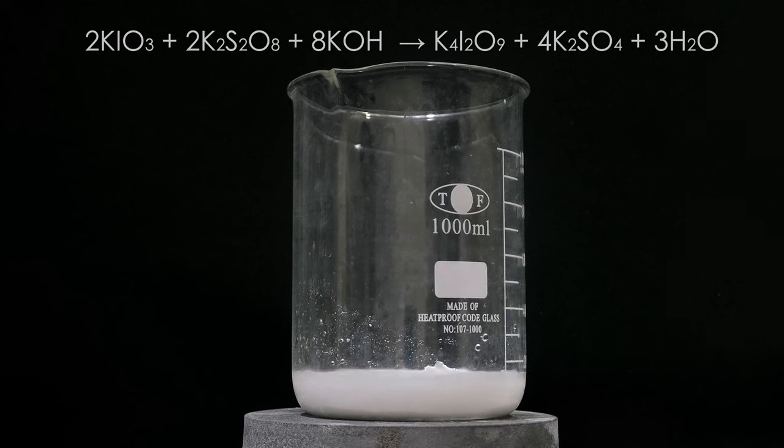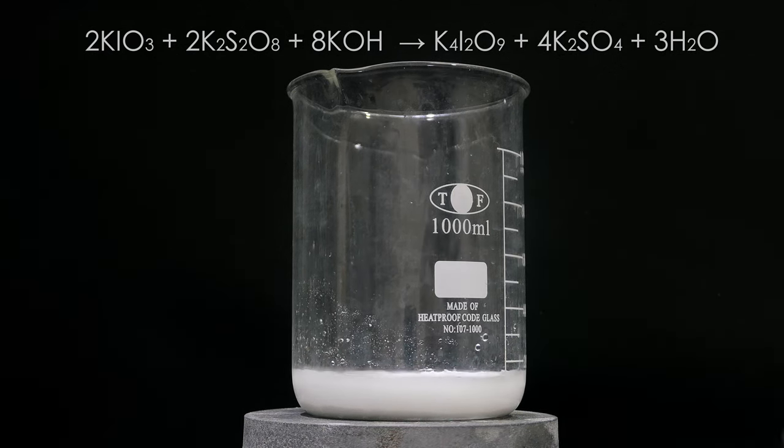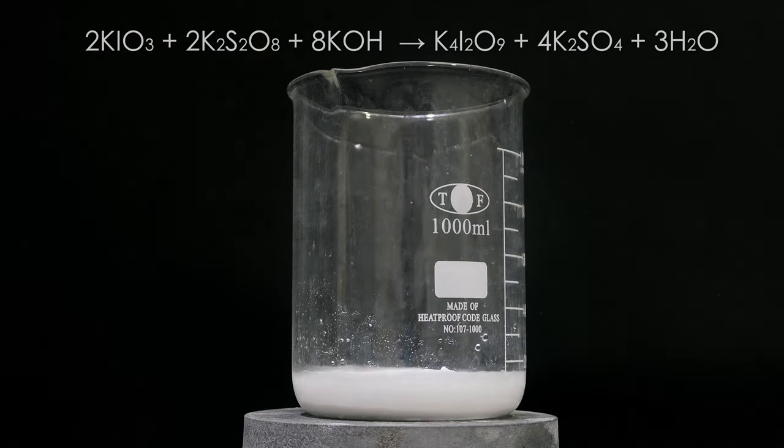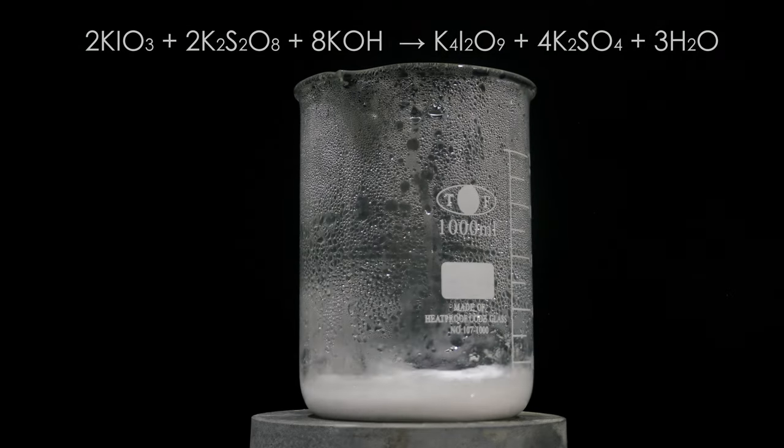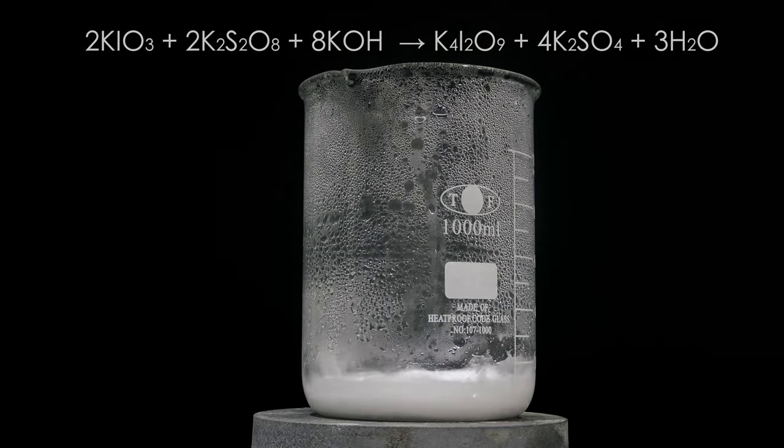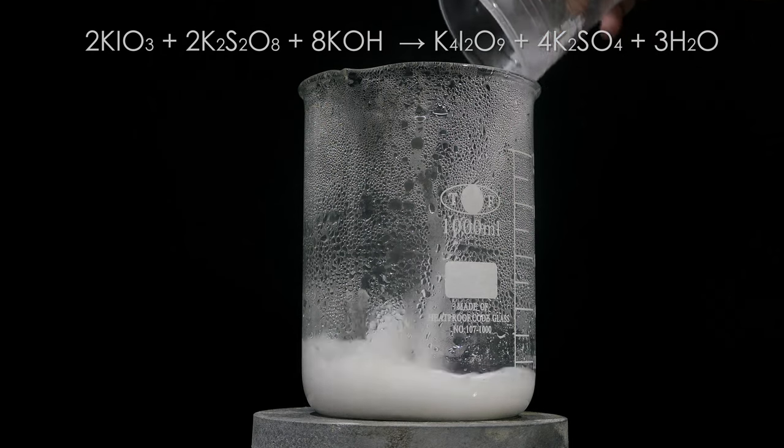Not everything was dissolved but this is fine. Then, 30 grams of potassium hydroxide is dissolved in about 100ml of water, and this solution is added to the beaker. After that, the solution is heated until boiling.